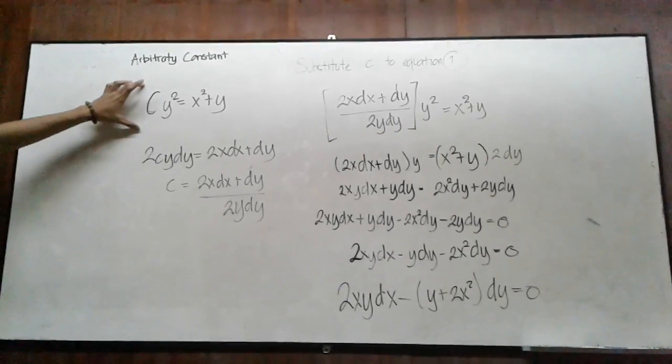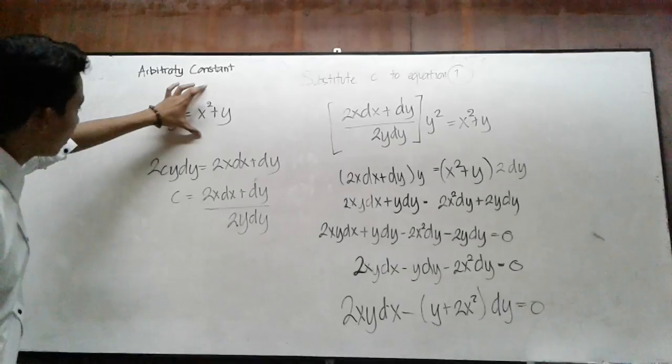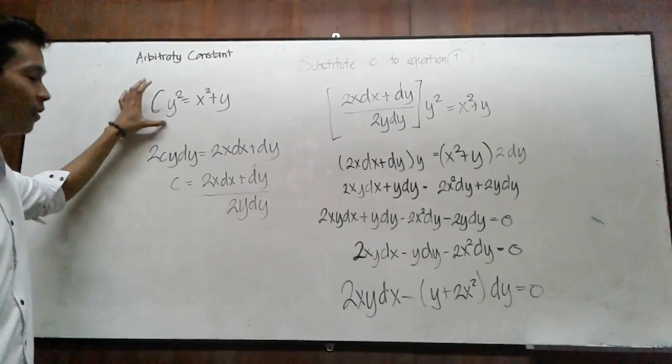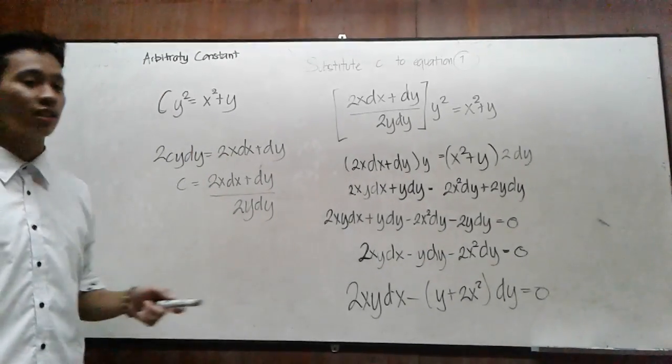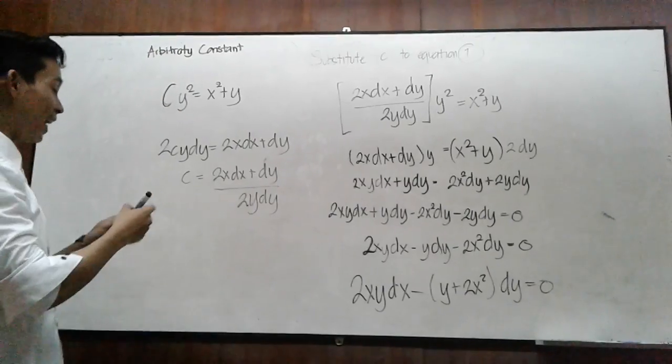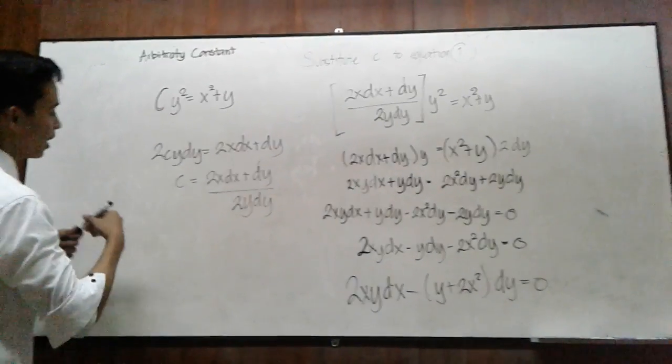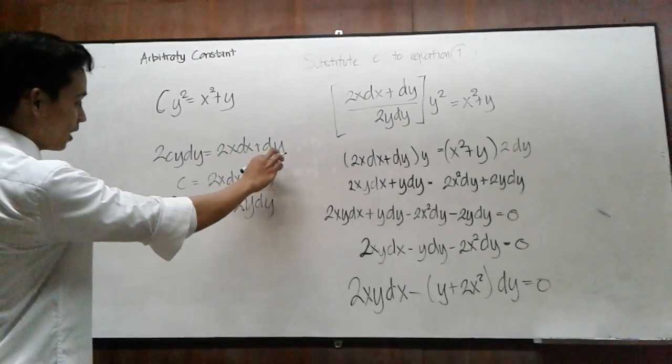In order to eliminate C, where C times y squared equals x squared plus y, you should derive the equation first to find dy and dx. The answer from the derivation of this equation is 2Cy dy equals 2x dx plus dy.